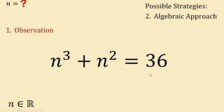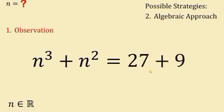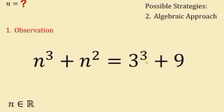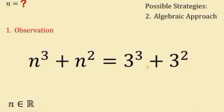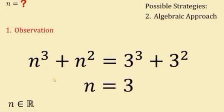By observation, we notice that 36 is just 27 plus 9. Take note that 27 equals 3 raised to the power of 3, and 9 is just 3 raised to the power of 2. Comparing the right-hand side to the left-hand side, we can say that n must be equal to 3 — this is by observation.